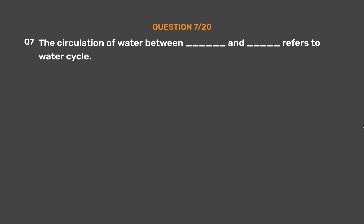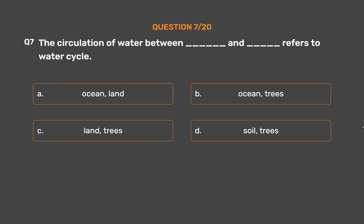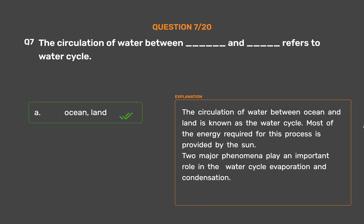Question number 7. The circulation of water between _____ and _____ refers to the water cycle. Option A: Ocean and Land. Option B: Ocean and Trees. Option C: Land and Trees. Option D: Soil and Trees. The correct answer is Option A: Ocean and Land. The circulation of water between ocean and land is known as the water cycle. Most of the energy required for this process is provided by the sun. Two major phenomena play an important role in the water cycle: evaporation and condensation.